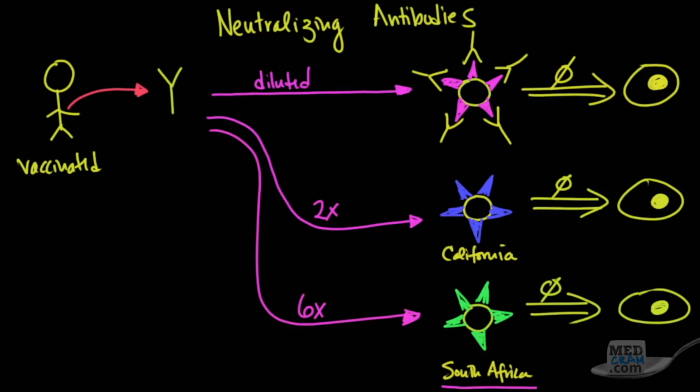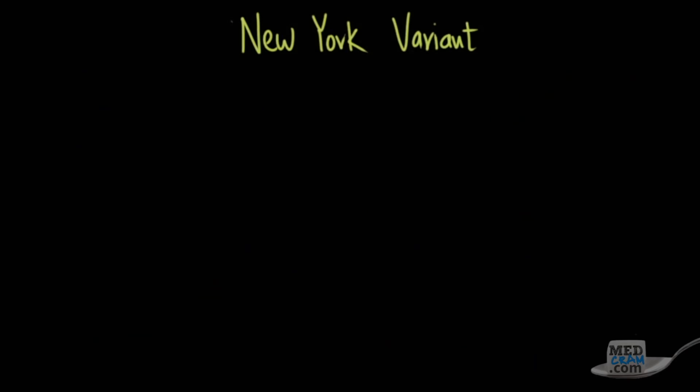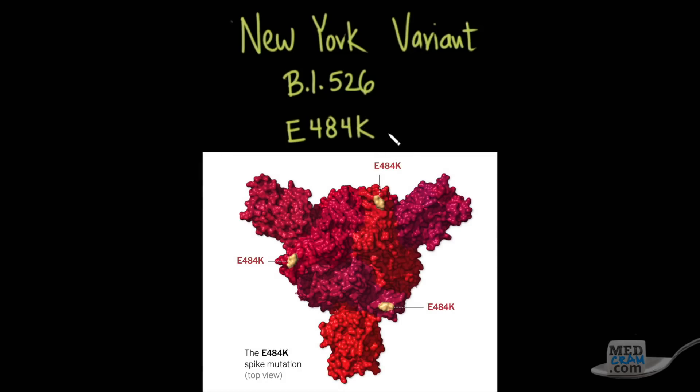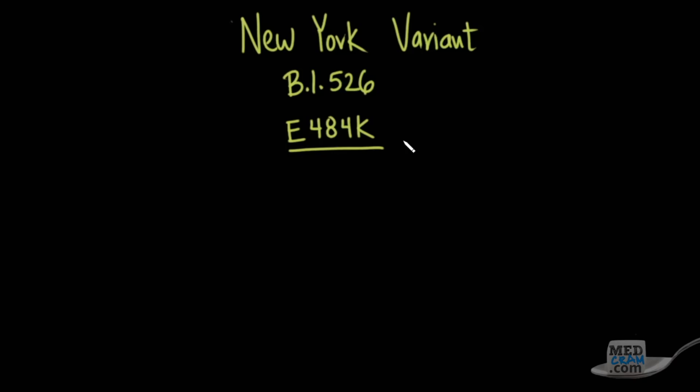There is currently one other variant that is quickly being discovered, and it's based on two papers that have not been peer-reviewed or published but are available on Medical Archive, and that is the New York variant. The New York variant is otherwise known as B1.526, and the mutation that keeps coming up independently across the globe is also found in this variant, and that's the E484K mutation in the spike protein. In this case, there's also another mutation called the S477N mutation.